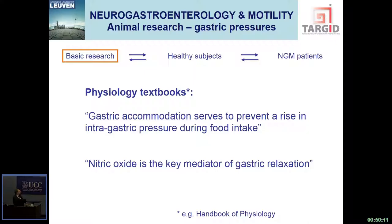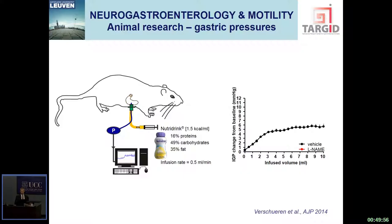The barostat was very unpleasant. In the physiology textbook it says gastric accommodation serves to prevent a rise in intragastric pressure during food intake, and nitric oxide is the key mediator. So we asked: why could we not measure gastric pressures during meal intake as a substitute? We started in rats, making a fistula, pumping in nutrients and measuring pressure. You get a gradual rise, and then as you infuse further volume, the rise stops — a plateau. If you block accommodation with a nitric oxide synthase inhibitor, the pressure continues to rise. So this compensation effect is probably accommodation measured as a pressure readout during nutrient infusion in rats.